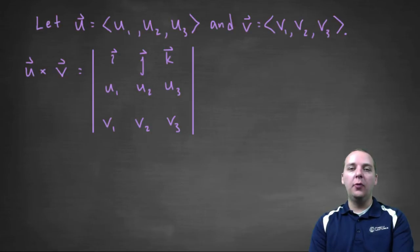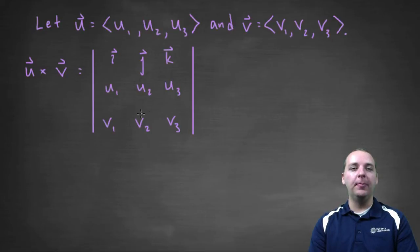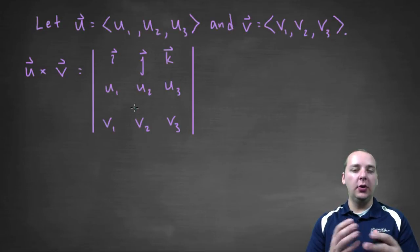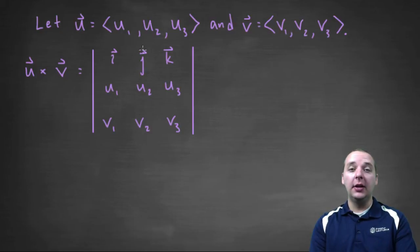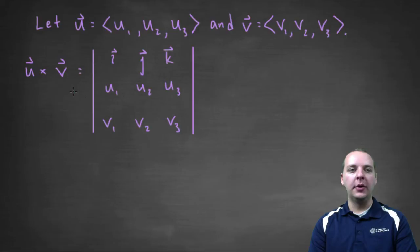In the last video we had a formula for how to actually get the cross product. If you have two vectors u and v, then to get the cross product you're going to do a 3 by 3 determinant, where the top row is always i, j, k, the second row is always the first vector, and the third row is always the second vector. Compute this determinant and you get your answer.